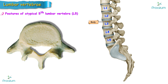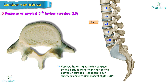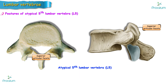The body is the largest of all the lumbar vertebrae. The vertical height of the anterior surface of the body is greater than that of the posterior surface; this difference is responsible for a sharp lumbosacral angle of about 120 degrees. The superior articular facets look more backwards than medially, and the inferior articular facets look more forwards than laterally, compared to the typical lumbar vertebrae.